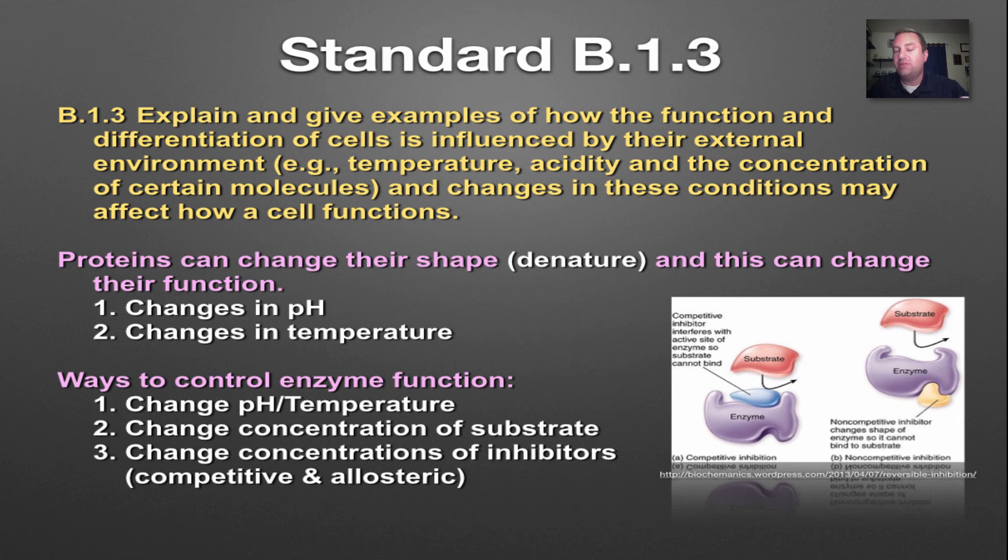When it comes to controlling enzymes, there's some different ways that you can turn them on or turn them off. A change in pH, which would cause it to denature, might actually turn it on, or it could be a way to turn it off. Enzymes that work in your stomach, which has a very low pH, will not work in the small intestine, which has a higher pH. Changing the concentration of the substrate will also influence how much the enzyme works. If there's a lot of enzyme but not much substrate, not a lot is going to happen. And vice versa, if you have a lot of substrate but low amounts of enzyme, the speed of that reaction is not going to be very fast.